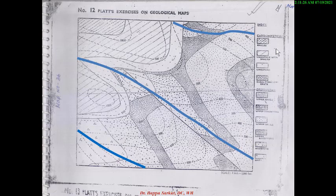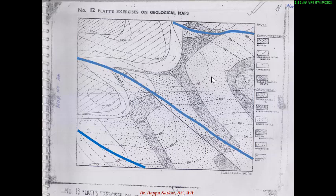Now you need to study the index. In this index there are two series of beds: one is Carboniferous and another is Ordovician. Under the Carboniferous era you see shale, limestone with shale, limestone, basalt, and conglomerate — four beds. The lower series is Ordovician, including upper shale, upper sandstone, lower shale, lower sandstone, mudstone, and grit — six beds.